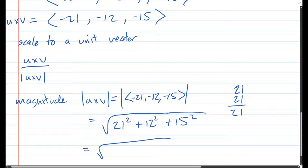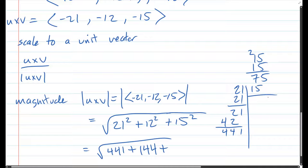21 squared: 2 times 21, 2 times 1 is 2, 2 times 2 is 4, so 441. 15 squared: 5 times 5 is 25, 5 times 1 plus 2 is 75, and then 1 times that, add it to get 225.